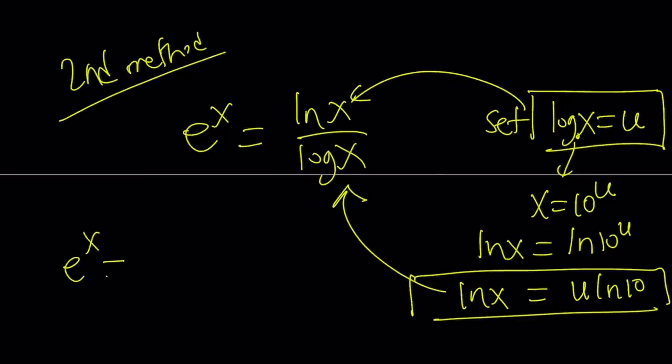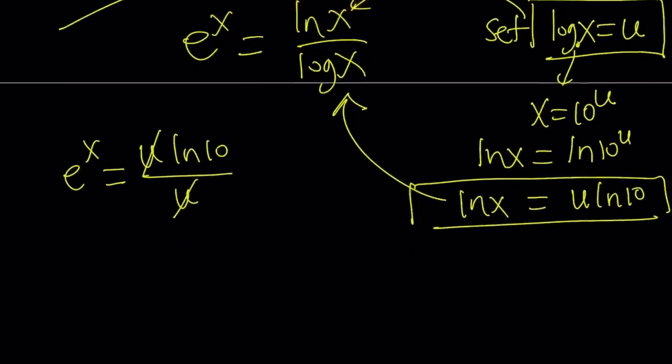u substitution plays an important role in a lot of different places, including integrals. So, from here, we get the following, e to the power x. I'm going to replace ln x with u ln 10, and I'm going to replace log x with u only, and the u cancels out, and I end up with pretty much the same result. Not pretty much, the exact same result. And we get e to the power x equals ln 10.